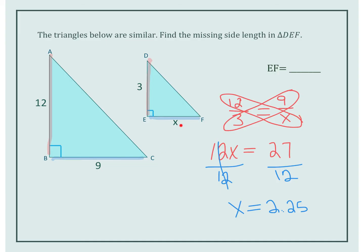And X is equal to 2.25. So this value right here is 2.25. And the problem says what is EF. So EF is equal to 2.25.